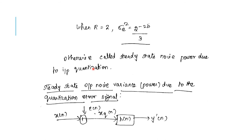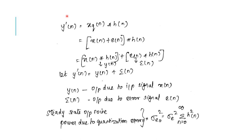To represent the steady state output noise power due to input quantization, we consider a block diagram with an LTI system. X(n) is given as the input, E(n) is the error signal that is added, and the resulting quantized signal XQ(n) is applied to the impulse response H(n), giving output Y'(n). The output equation Y'(n) is represented as XQ(n) convolved with H(n).